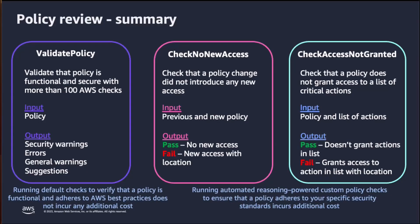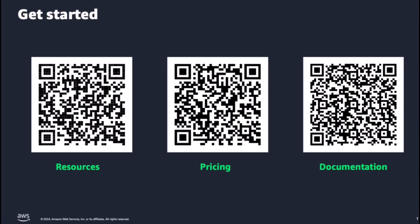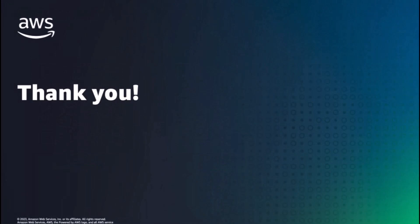To recap, in addition to Validate Policy, Access Analyzer now supports automated reasoning-powered custom policy checks with two new APIs: Check No New Access and Check Access Not Granted. Security teams can run custom policy checks for accurate and efficient analysis of modified policies. Policy checks can be embedded in CI/CD pipelines so that checks can be run against policies without having to deploy them. Developers can also run custom policy checks from their local development environments and get fast feedback. You can find examples for reference policies and learn how to set up and run a custom policy check in the Access Analyzer custom policy check samples repository — the link is in the description.